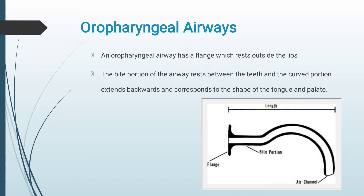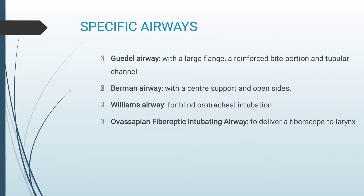Starting with oropharyngeal airways. An oropharyngeal airway has a flange which rests outside the lips. The bite portion of the airway rests between the teeth and the curved portion extends backwards and corresponds to the shape of the tongue. Specific types include: Guedel airway with a large flange, a reinforced bite portion, and a tubular channel; Berman airway which has a center support and open sides; Williams airway which is used for blind orotracheal intubation; and Ovassapian fibre-optic intubating airway which is used to deliver a fibroscope to the larynx.